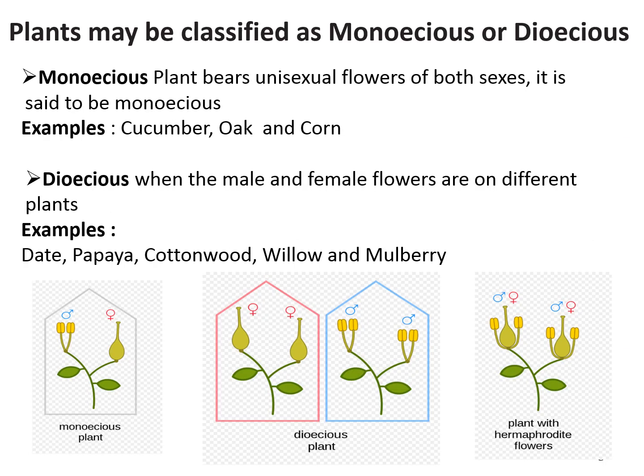Plants may be classified as monoecious or dioecious. Monoecious plants bear unisexual flowers of both sexes on the same plant, but on two different branches — examples are cucumber, oak, and corn. In dioecious plants, male and female flowers are on separate plants — examples include papaya, cottonwood, and mulberry. In hermaphrodite plants, as shown in the lower right figure, those plants which contain both androecium and gynoecium present apart in the same flower are also called bisexual or perfect flowers.